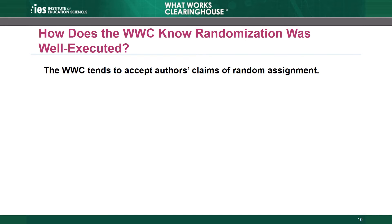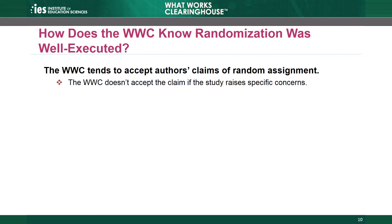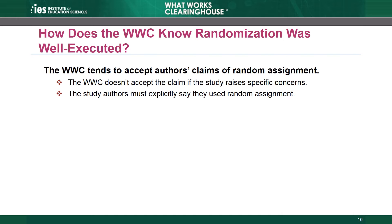The WWC tends to accept an author's claims about random assignment — we take their word for it if the authors say they used random assignment. However, the WWC looks for anything that suggests the study did not conduct well-executed random assignment. When the description in the study is incomplete, the WWC may contact the authors with questions. The WWC carefully reviews the entire text, paying attention to how the authors describe the process, not just to the labels they use. Sometimes authors say only 'students were randomly assigned,' but later may say they included a student who was not actually randomly assigned — a sign that randomization may not have been well executed. However, the authors do need to say they randomly assigned units; otherwise, the WWC assumes assignment was not random.